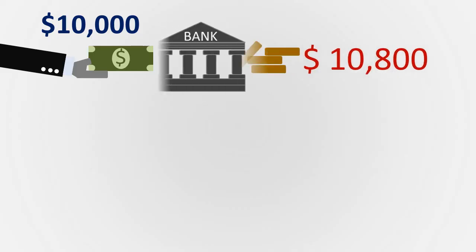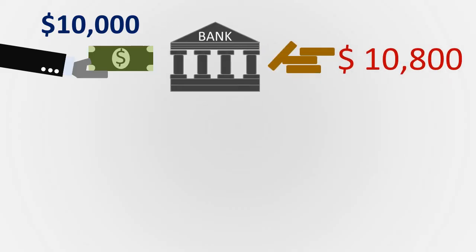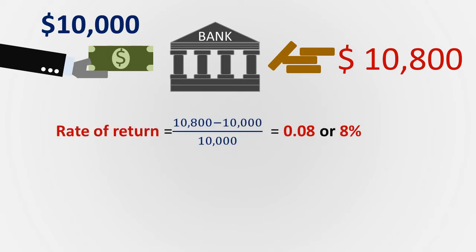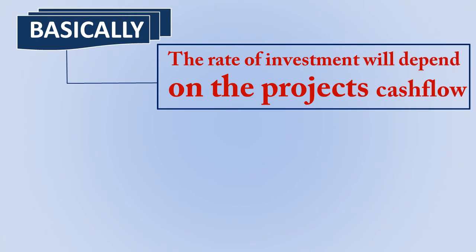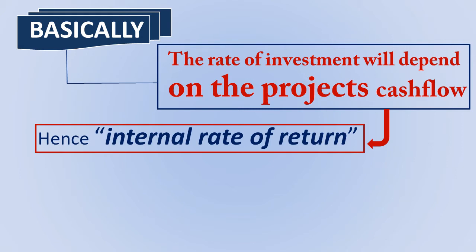Assume that you deposited $10,000 in a bank and would get $10,800 after one year. What is the true rate of return on your investment? The rate of return is 0.08, or 8%. The rate of return — that 8% — makes the discounted or present value of your cash inflow, the $10,800, equal to your investment of $10,000. The rate of return depends on the project cash flow and not external factors, which is why it's known as internal rate of return.